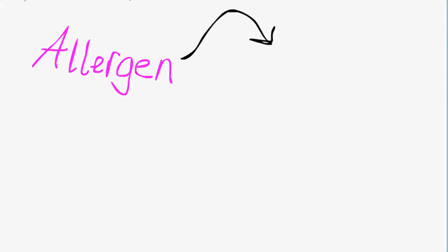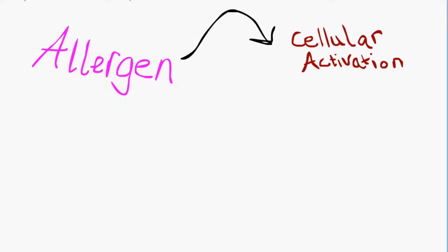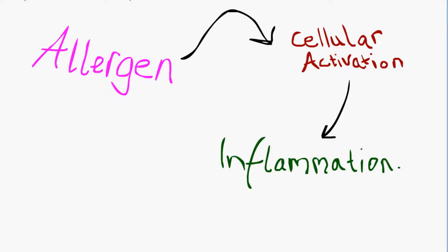The main principle behind asthma is that we have some kind of allergen which causes cellular activation in the airway, which results in acute or chronic inflammatory processes. These occur through the action of local cytokines and their mediators.